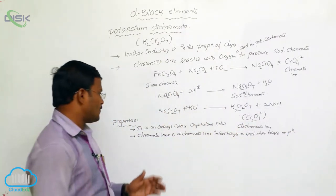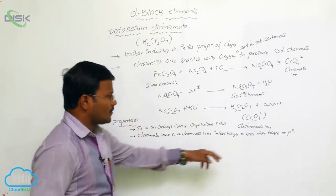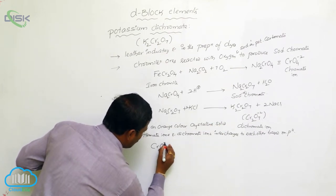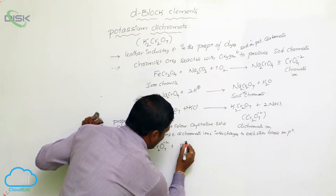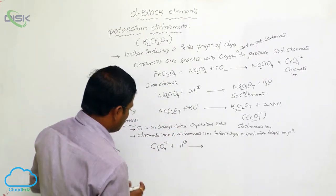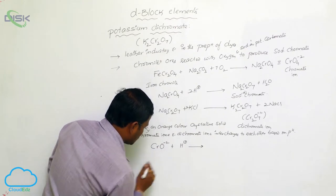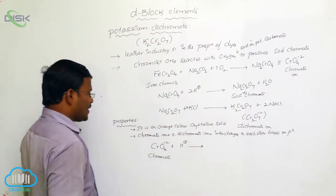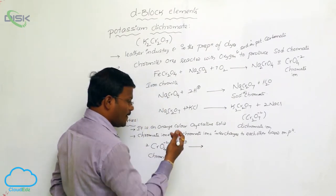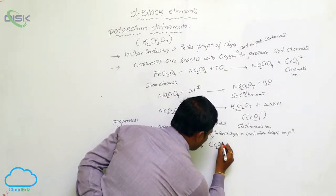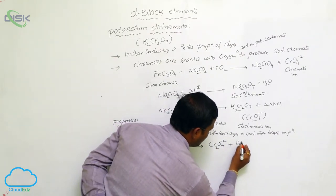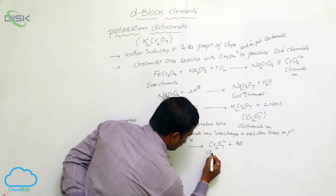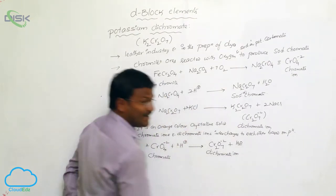The favorable condition for conversion of chromate into dichromate or dichromate into chromate depends on pH. In acidic condition, chromate ions CrO₄²⁻ when reacted with H⁺ ions — that means pH below 7 — they are converted into Cr₂O₇²⁻ with the release of a water molecule. This is the disproportionation or interconversion of chromate ion into dichromate ion.